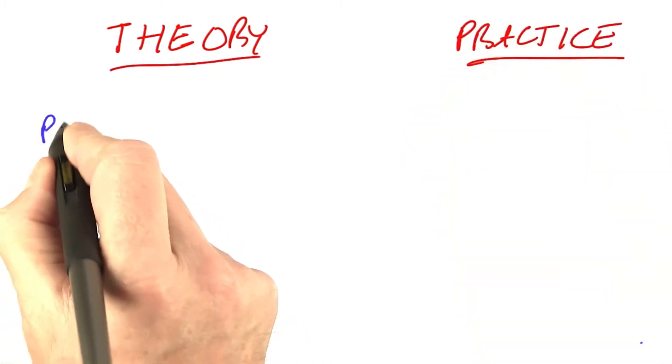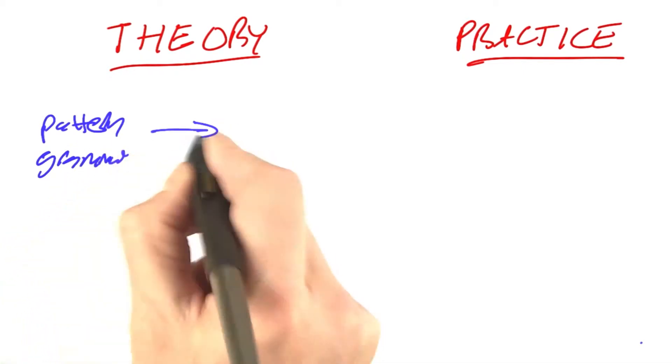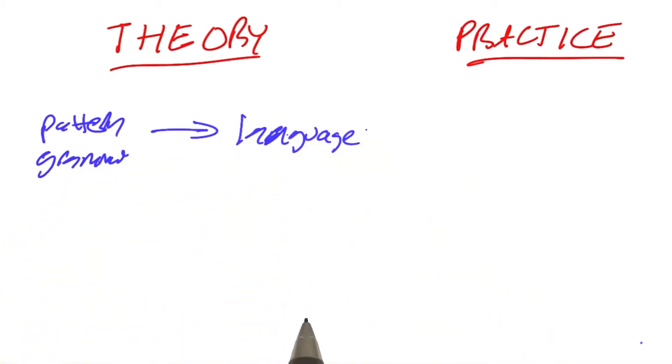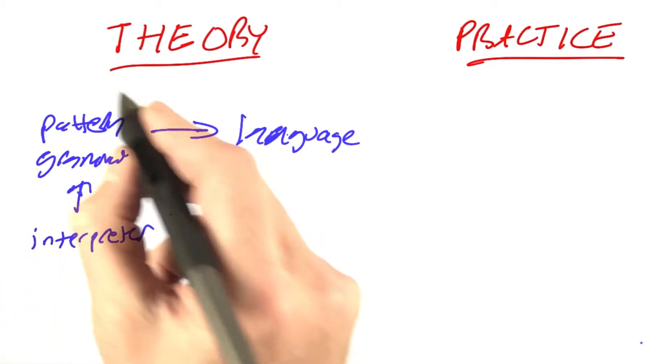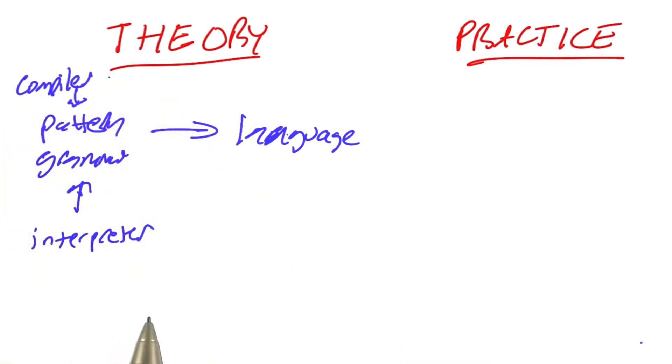In theory, we've learned about patterns, which are grammars, which describe languages, where a language is a set of strings. We've learned about interpreters over those languages and about compilers, which can do the same thing, only faster.